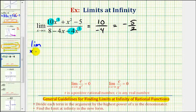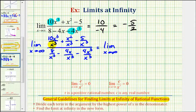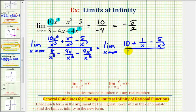So we'd have the limit as x approaches infinity of ten x to the third divided by x to the third, plus x squared divided by x to the third, minus five divided by x to the third. We're going to divide all of this by eight divided by x to the third, minus four x divided by x to the third, and then finally minus four x to the third divided by x to the third. Now we'll simplify each term: ten x to the third divided by x to the third is ten; x squared divided by x to the third is one over x; five divided by x to the third stays as five over x to the third; eight divided by x to the third stays; four x divided by x to the third simplifies to four divided by x squared, so I have minus four divided by x squared; and four x to the third divided by x to the third is just four.